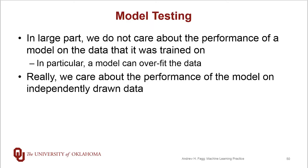What we care about is how the model performs on data that are statistically independent of the training data. We want to build a model now given the information we have, but we want that model to perform well on data drawn sometime in the future. One hazard in the model building process is overfitting: if we only look at performance metrics for the training data it can look quite good, but that doesn't tell us anything about how well we'll perform with future data.